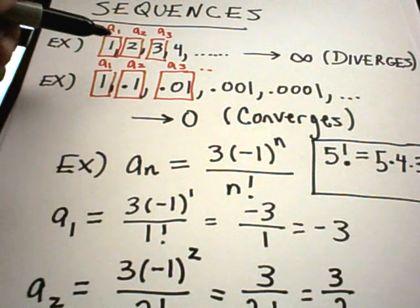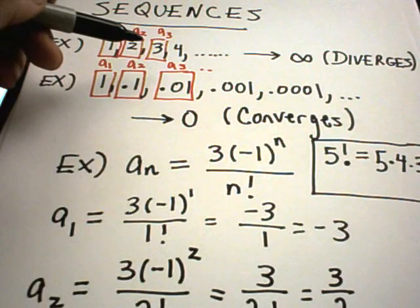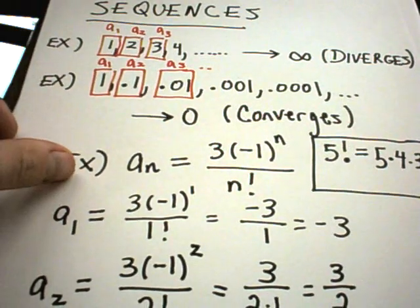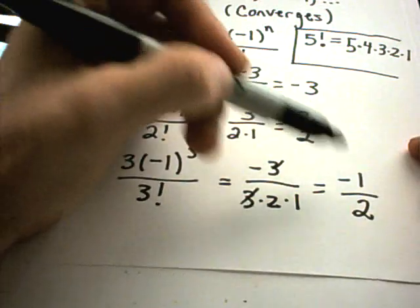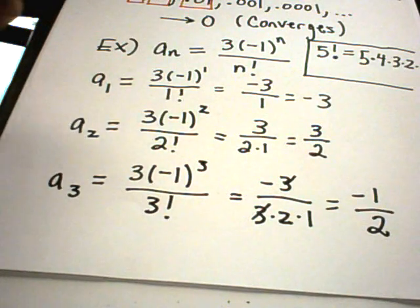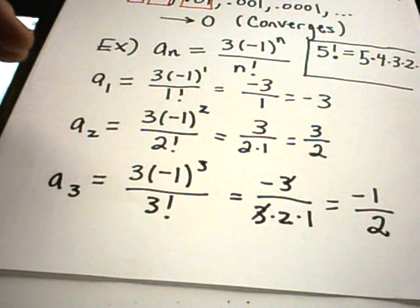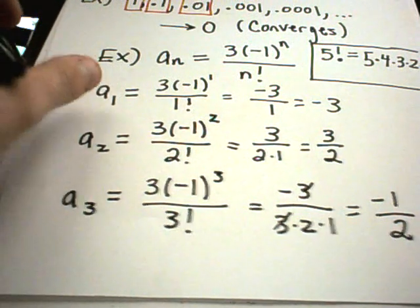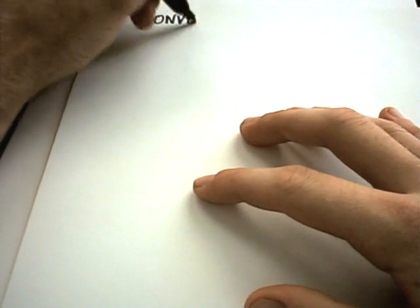In general, the question for a particular sequence is whether it converges or diverges. It looks like the numbers are getting smaller and possibly approaching zero, but you want a more algebraic or calculus-based way to justify that. Typically what you'll do for these is compute limits. Let's do a couple of examples showing sequences converging or diverging.